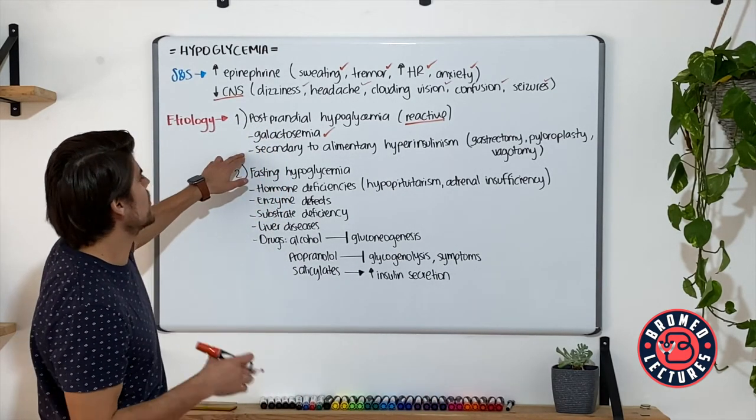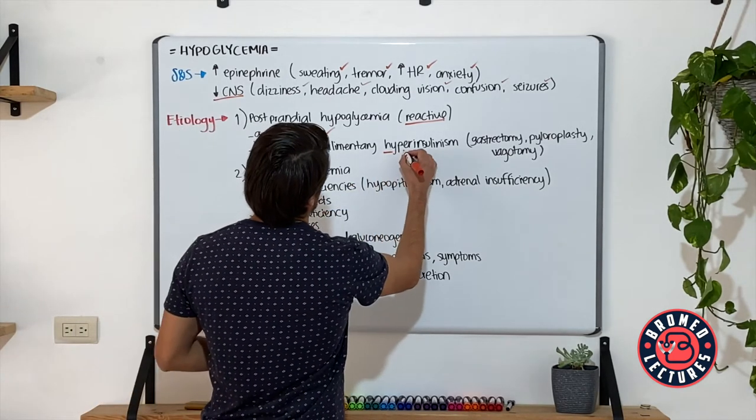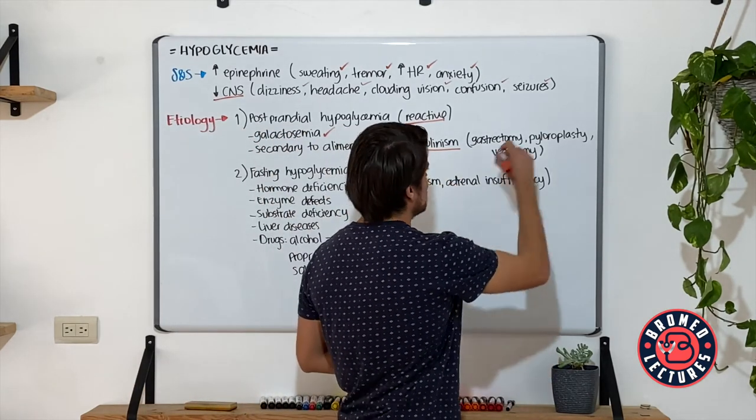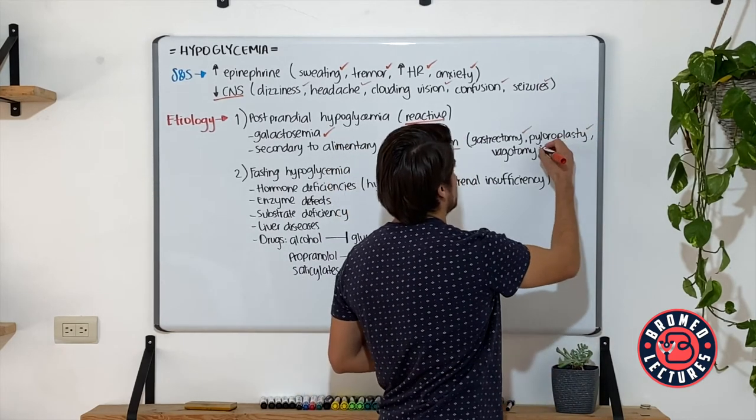Another situation are patients that develop hyperinsulinism. These patients are usually patients that underwent gastric procedures such as gastrectomy, pyloroplasty, or vagotomy.